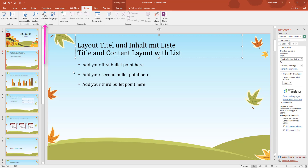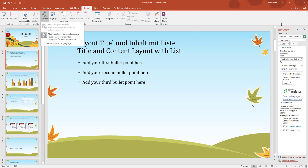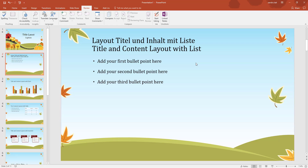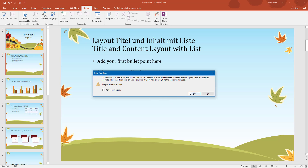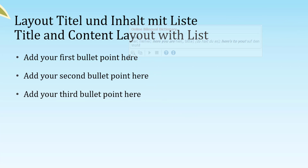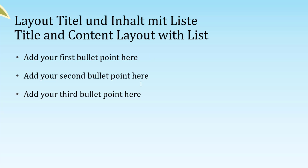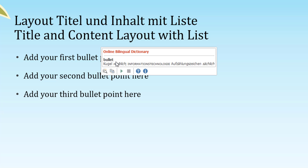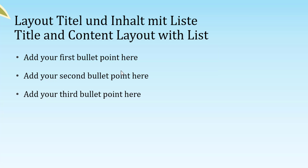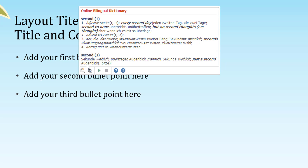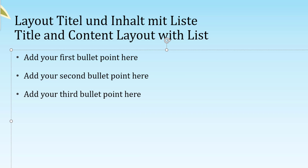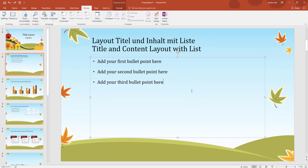There's another option with Translate: Mini Translator. Instead of a box on the right, it's a little mini box that pops up near the word and translates quickly - very handy if you have a lot of translation to do. Click Translate then Mini Translator; the warning pops up again, click Yes. Now if I hover the cursor over a word it brings up the mini box with the German version. I can expand it to show the full panel, copy to clipboard, or click Play to hear it. Don't forget you can change the language at the bottom.